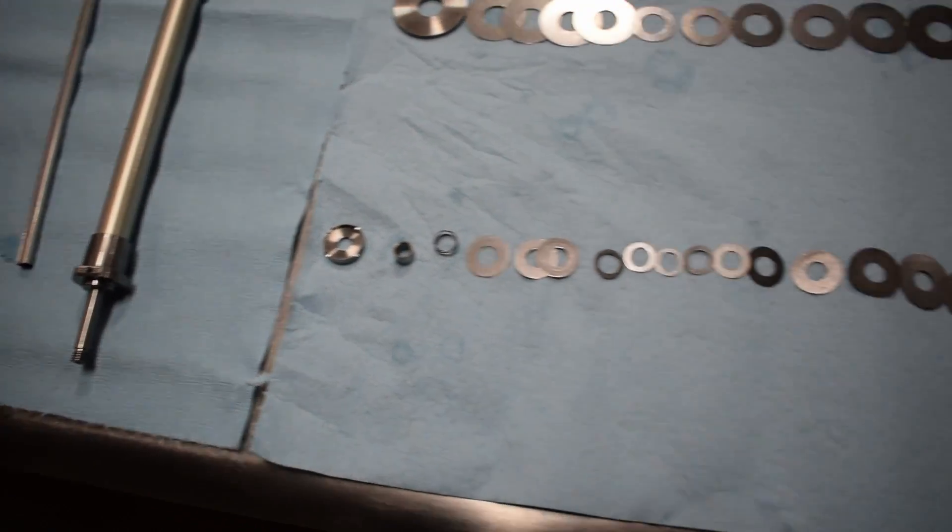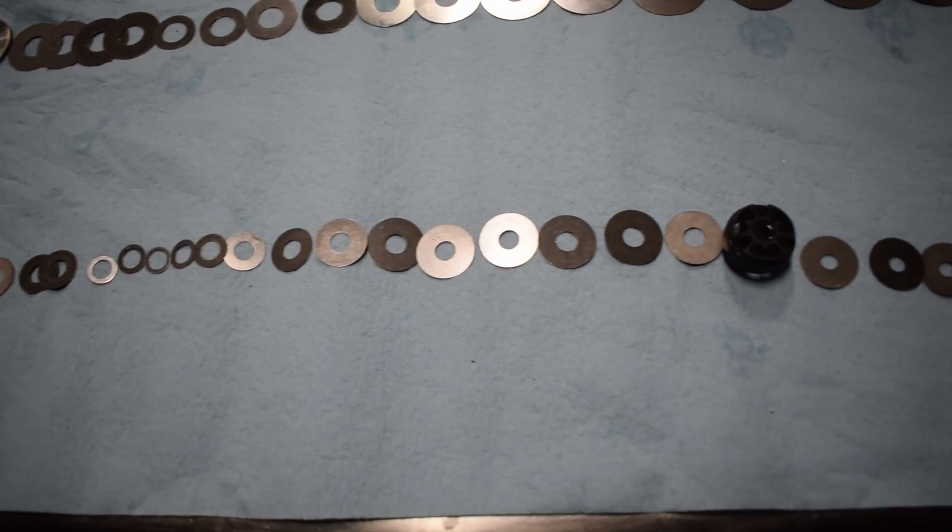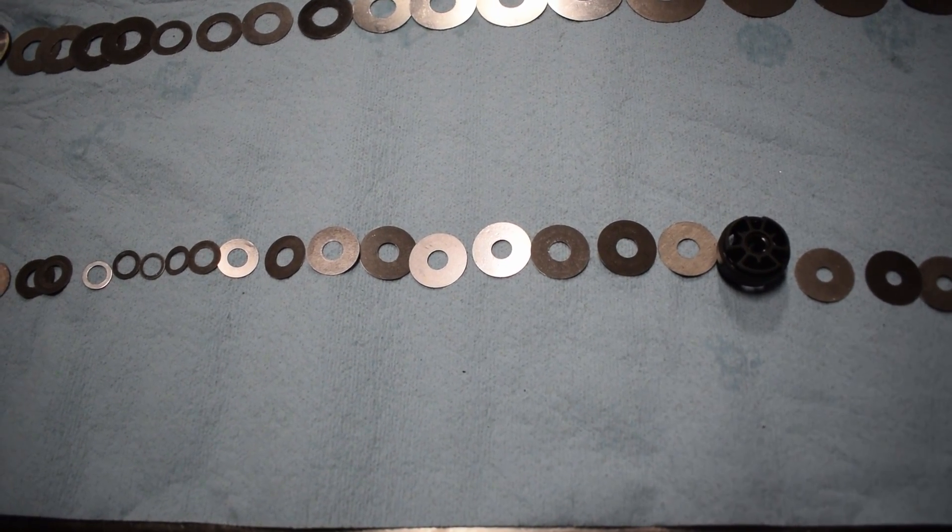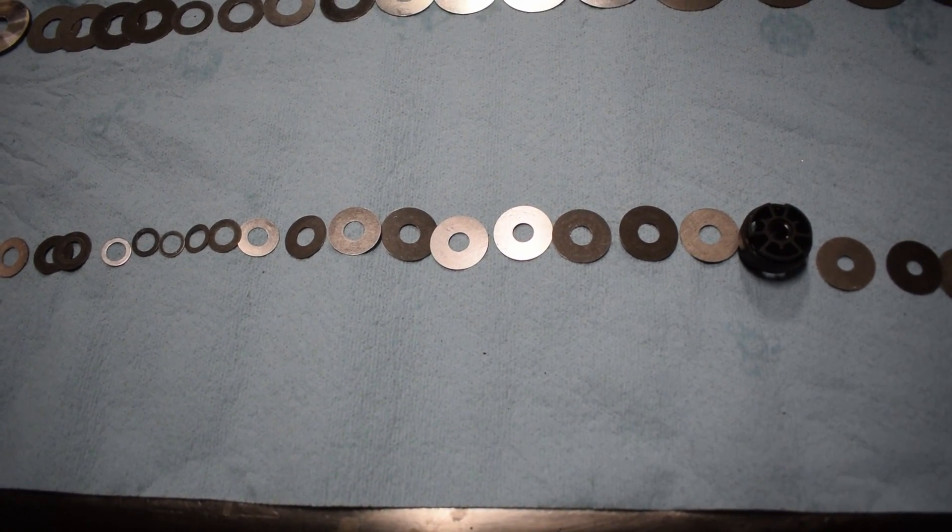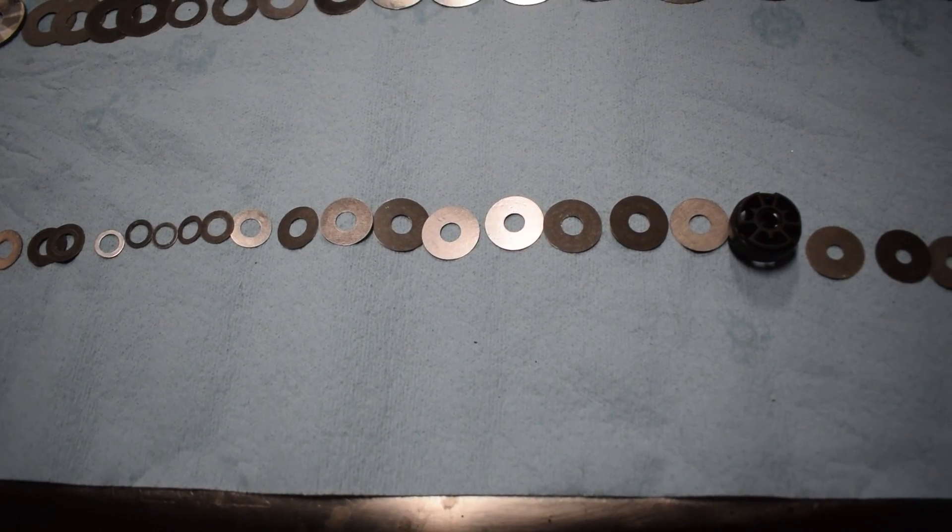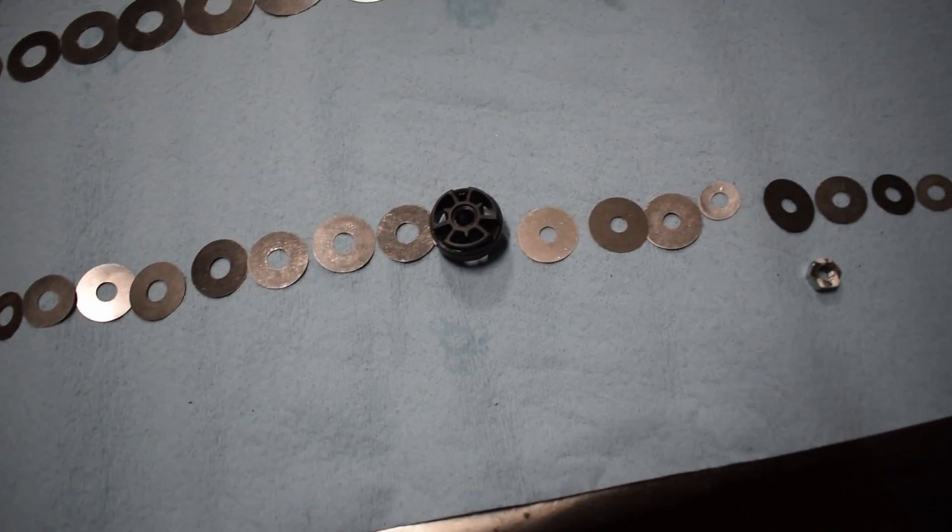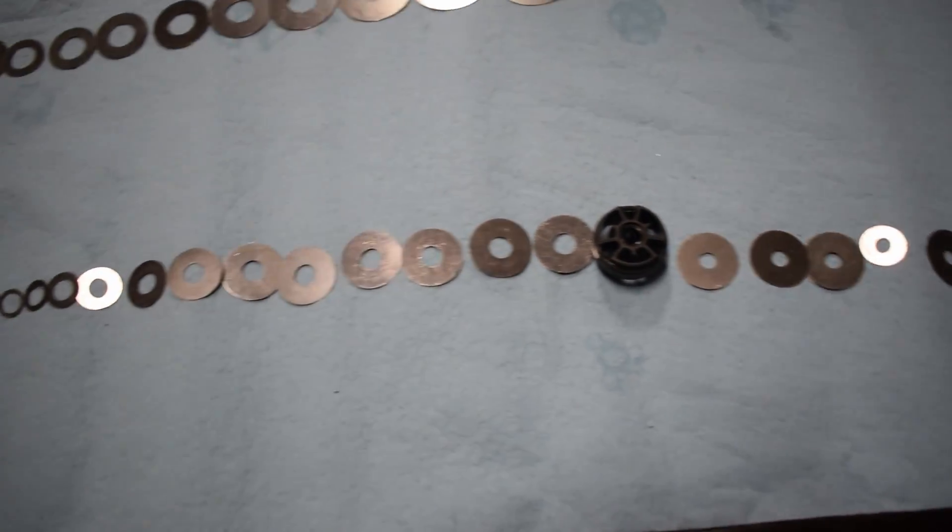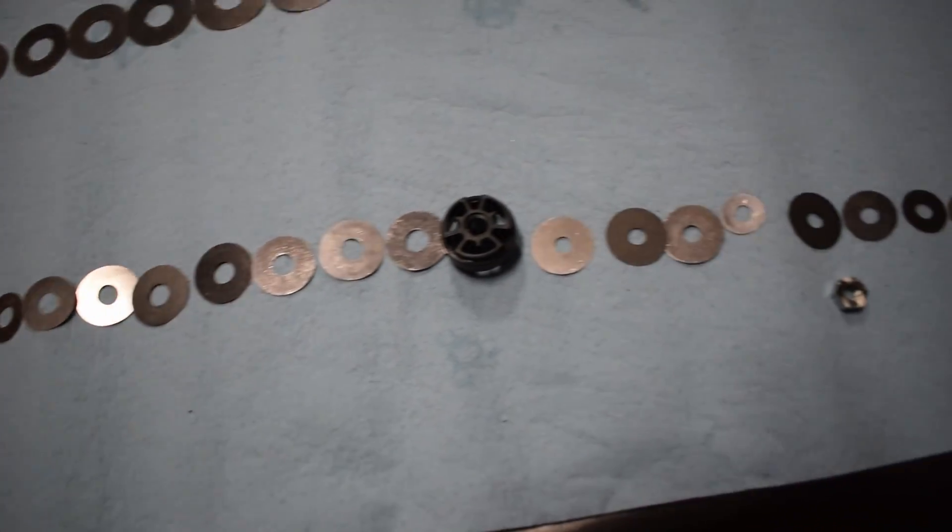This is the stiffest Honda 250 setting they've had in the last, I'd have to go look at my notes, but a long time. Since probably like 2012 or 2014, something like that. This is the stiffest fork Honda has done in quite some time, but it's the same parts and pieces as a KYB fork and as previous Showa forks, even though they're 49mm, the internals are basically the same.